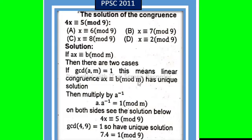Then multiply by a⁻¹, where a·a⁻¹ ≡ 1(mod m) on both sides. See the solution below.